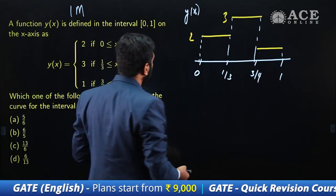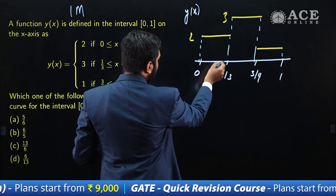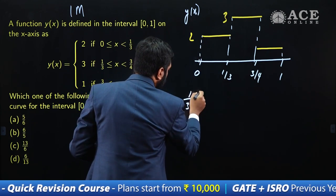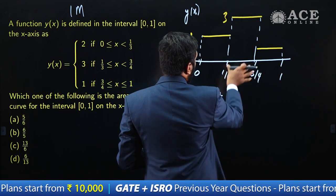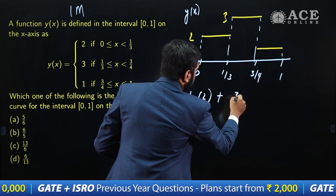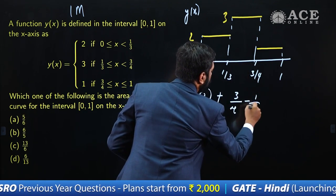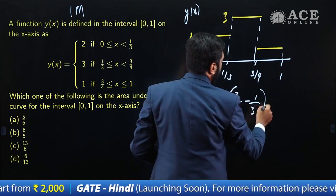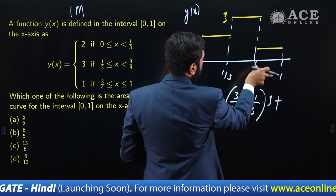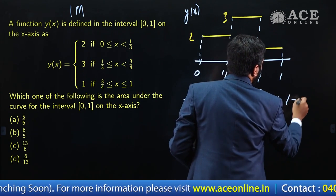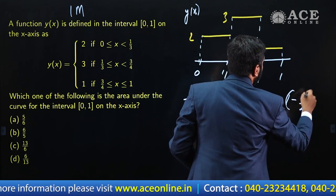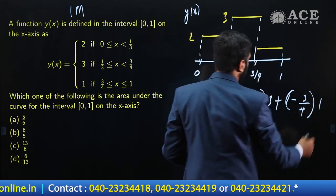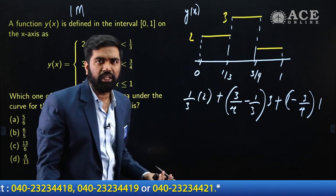Let me find the areas of the rectangles. This length is 1/3 and the height is 2. So this is (1/3) × 2 plus. Now for the second rectangle, you take the difference: (3/4 − 1/3) × 3 — the height is 3 units — plus the third: (1 − 3/4) × 1.